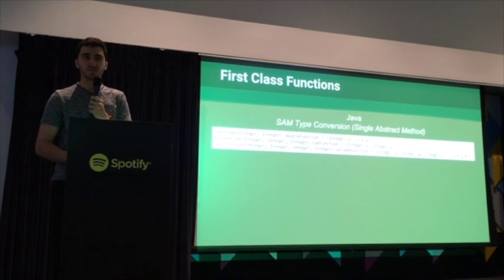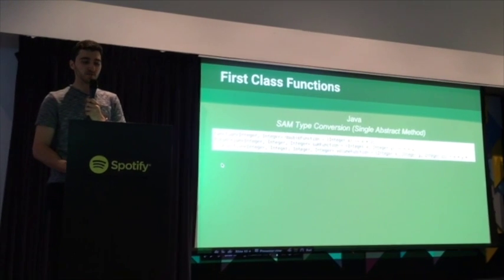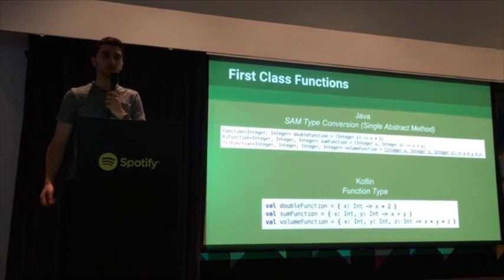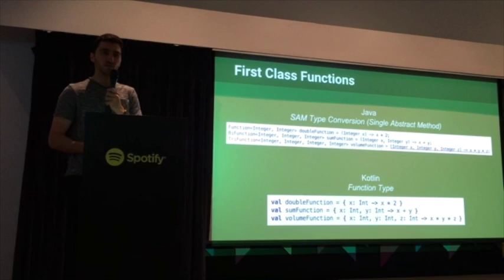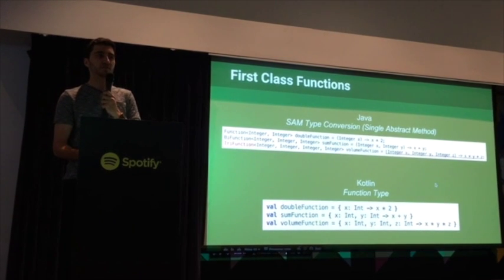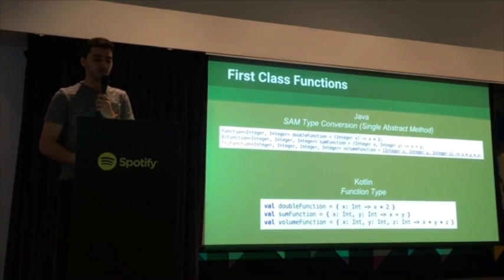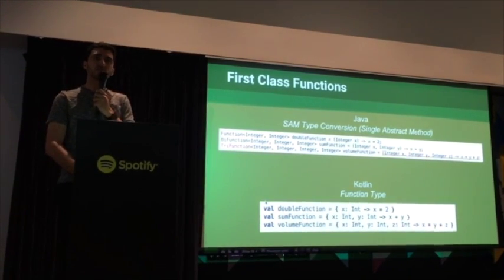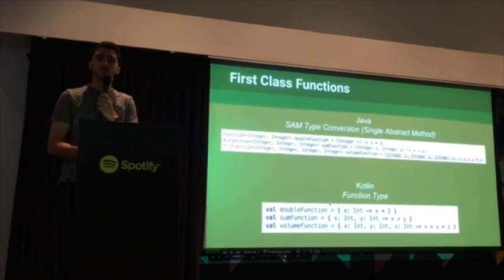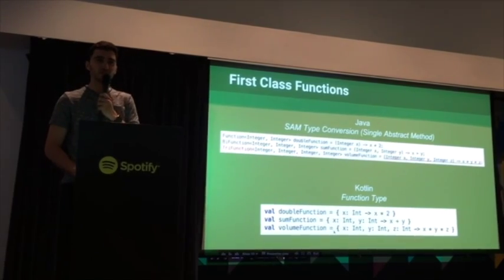If you wanted to define a custom function type for some reason, you'd have to make that interface, which is a little more code. In Kotlin, they actually have support for proper function types. You define functions with curly braces and there are no interfaces representing them — they're just function types. It's also more concise because the Kotlin compiler infers types from the right-hand side, so you write a bit less code.